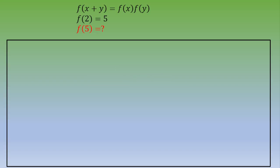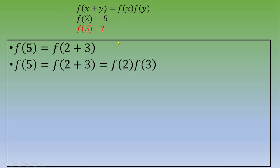One way to solve this is to start from the equation f of 5 and try to interpret f of 5 as a function of f of 2 as much as possible. So we can start. f of 5 is f of 2 plus 3. Now, if we use this first condition, f of 5 equals f of 2 times f of 3.